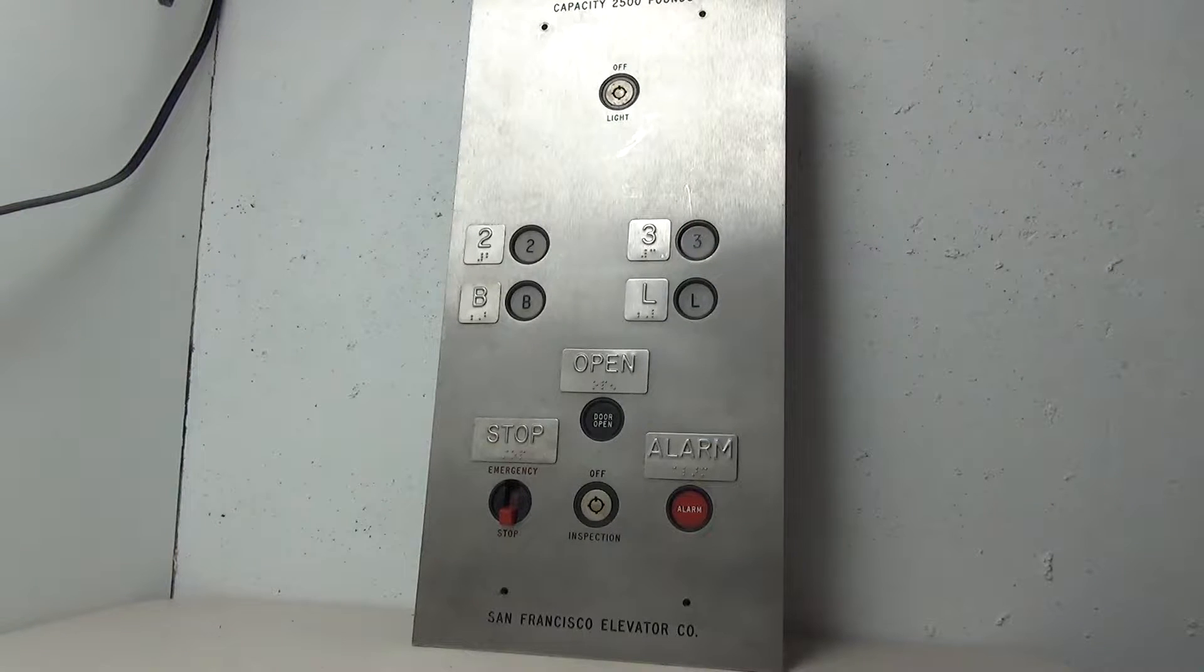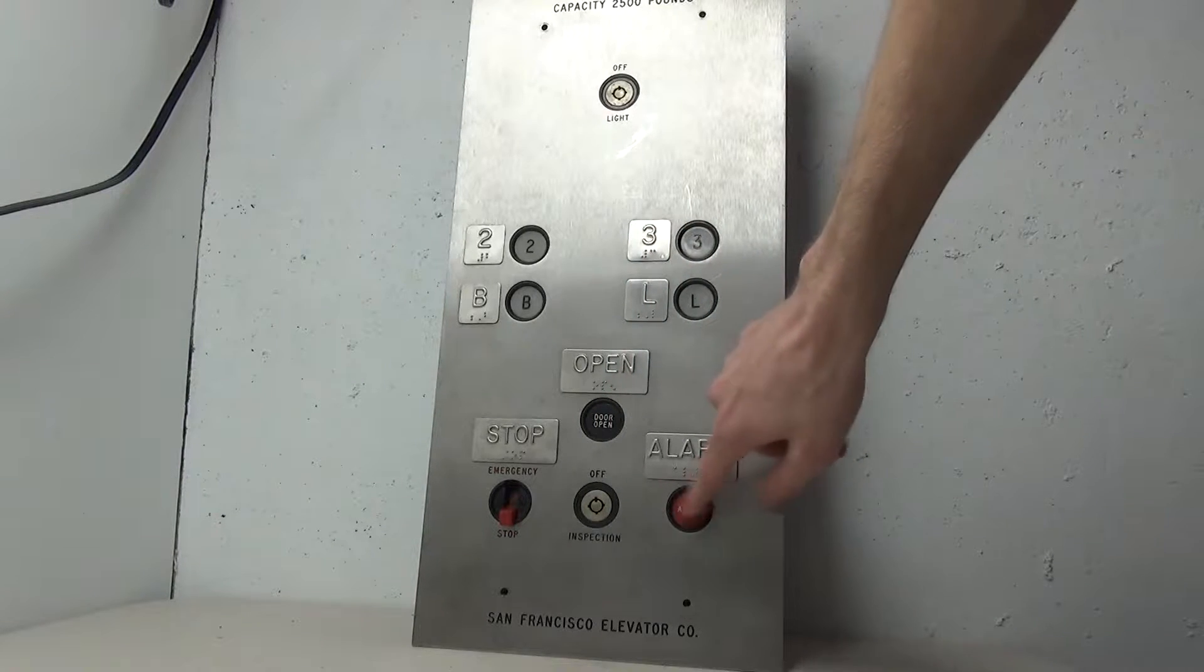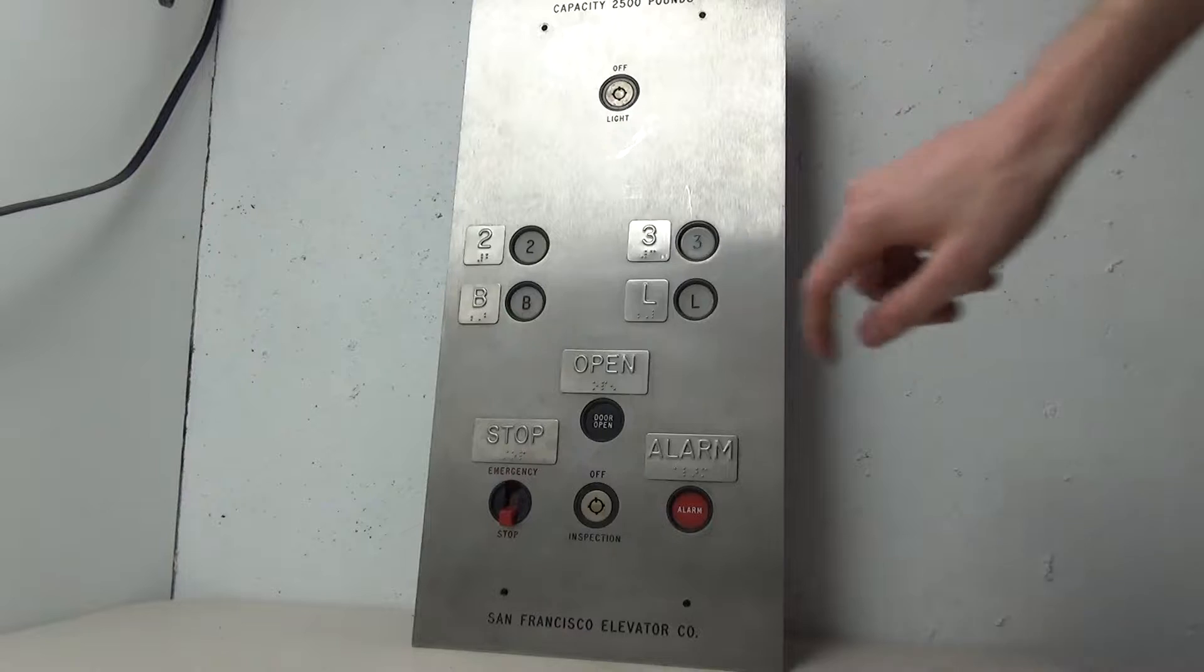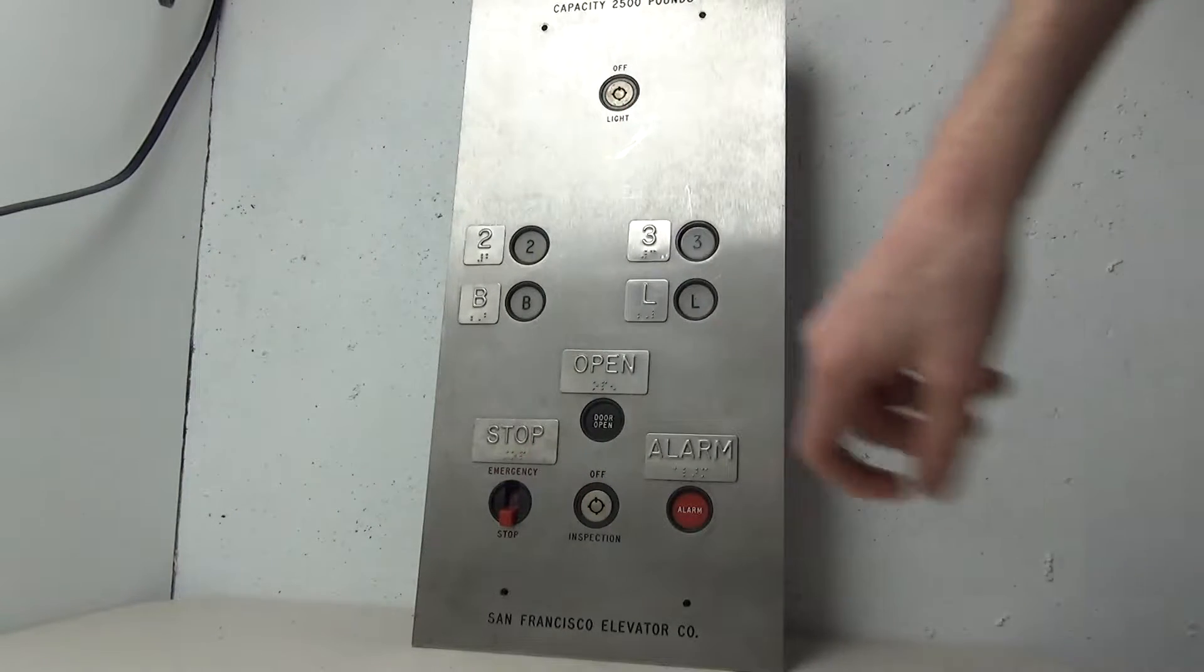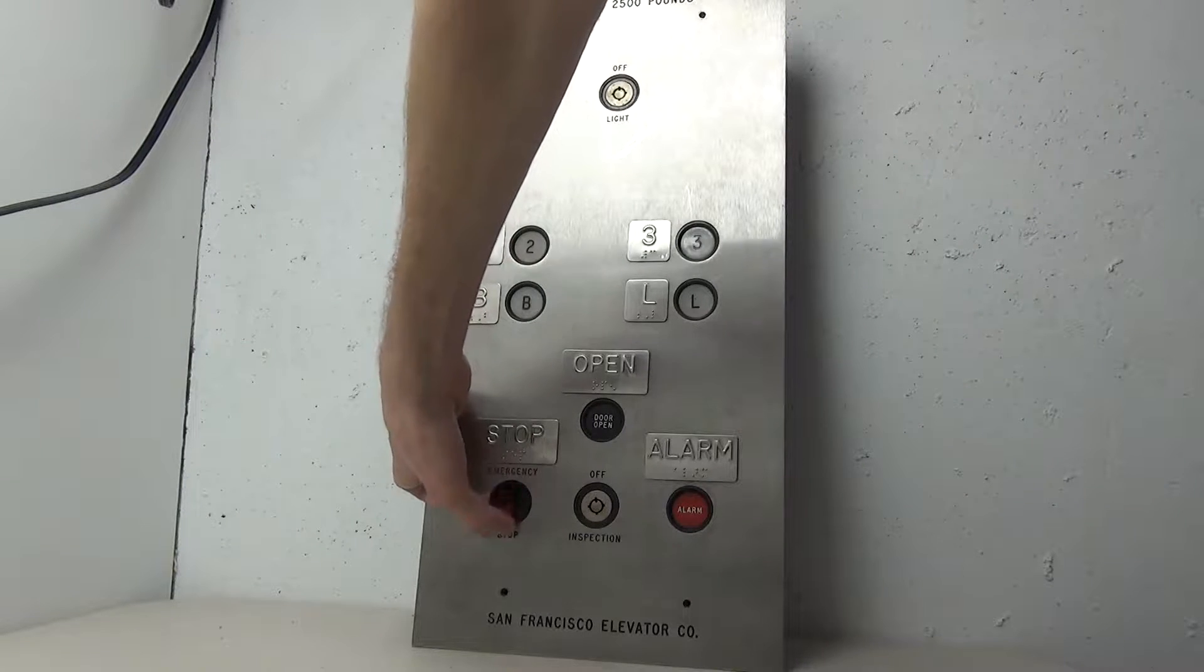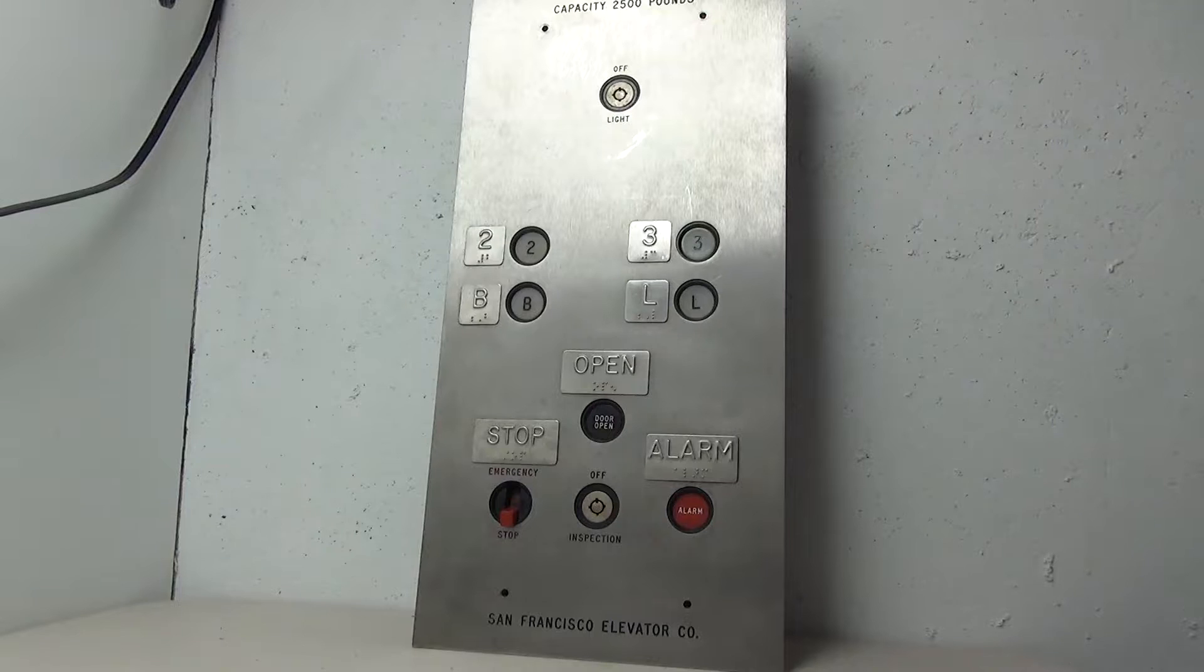The door open button presses fine, but the alarm button is just straight up stuck so we're going to have to fix that. There's an inspection key switch with a little dirt on it, we'll wipe the key switches off. The emergency stop won't flip the other way so we're going to have to clean that up.